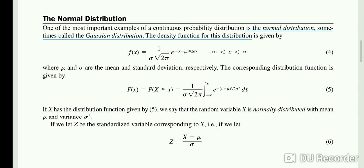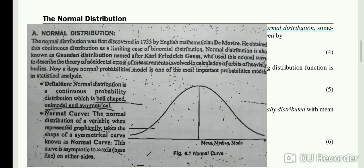Let's talk about the definition of normal distribution. The English mathematician De Moivre discovered this continuous distribution as a limiting case of binomial distribution. Normal distribution is also known as Gaussian distribution, named after Carl Frederick Gauss, who used this normal curve to describe the theory of accidental errors of measurements involved in calculation of orbits of heavenly bodies. Nowadays, the normal probabilities model is one of the most important probability models in statistical analysis.